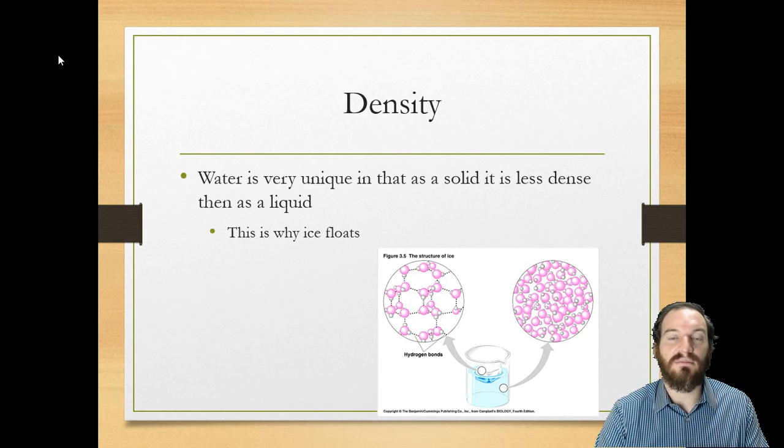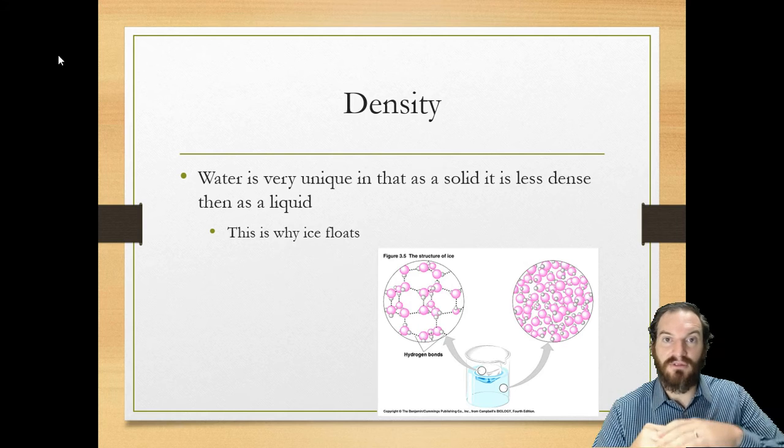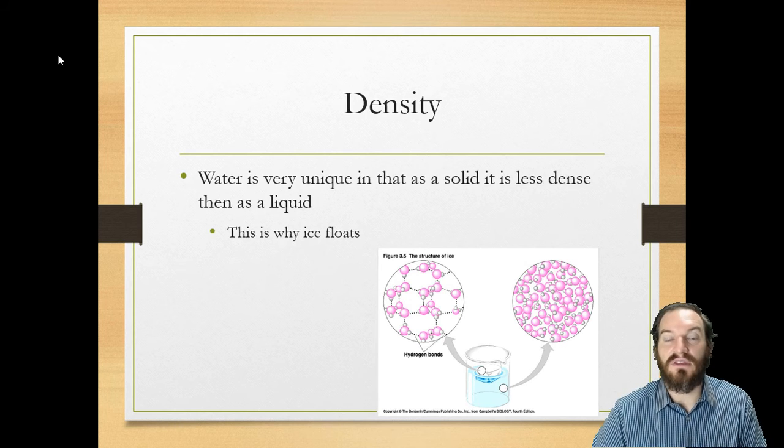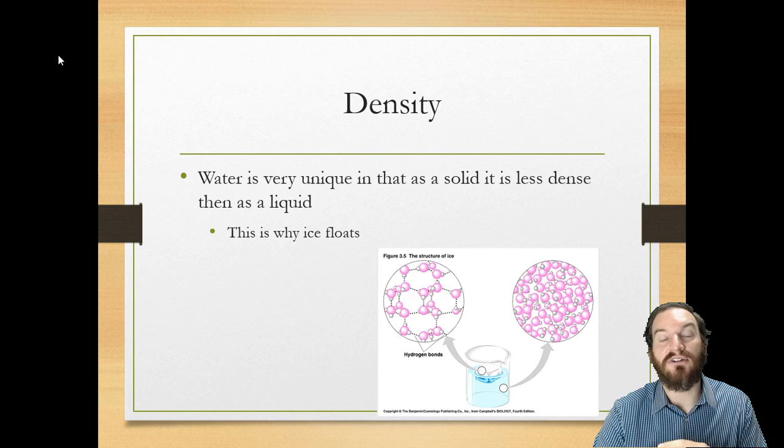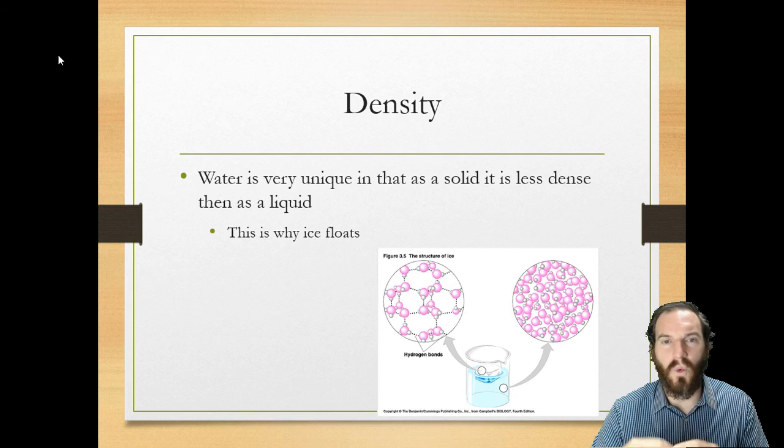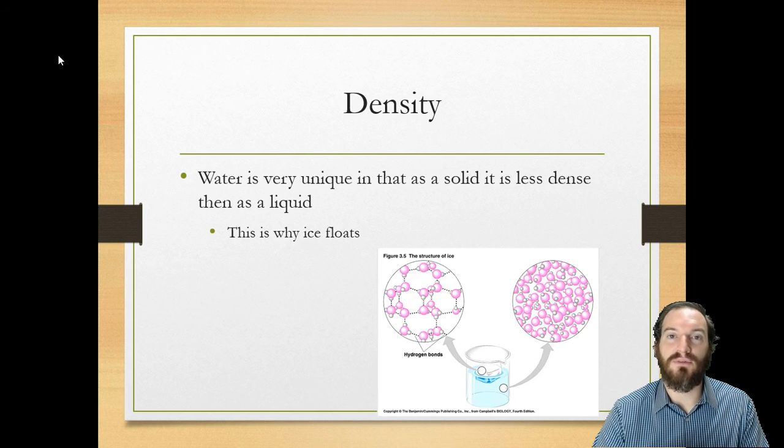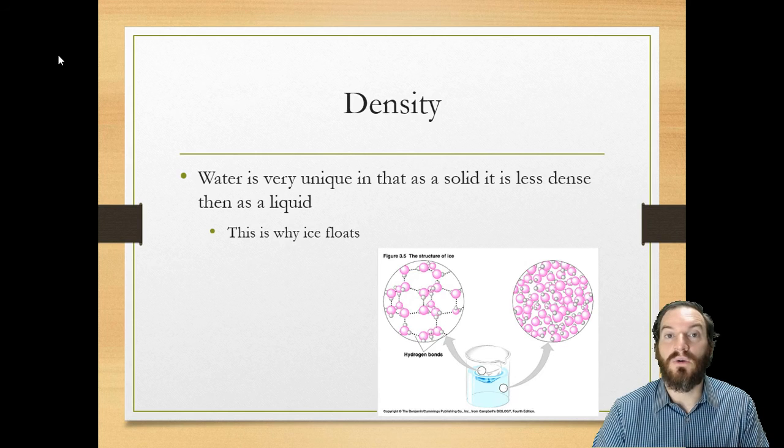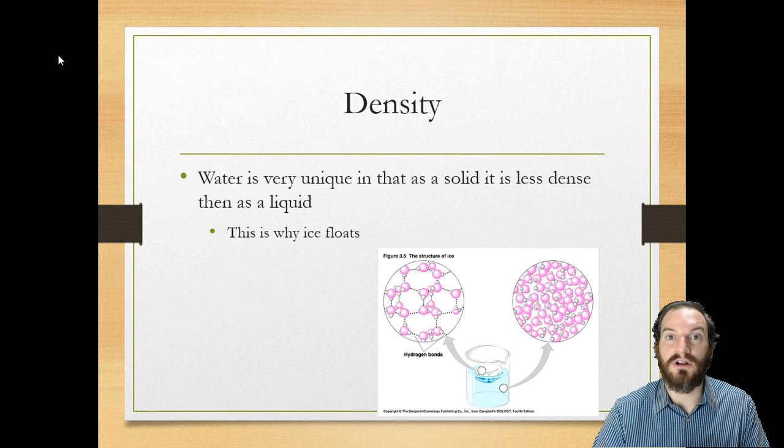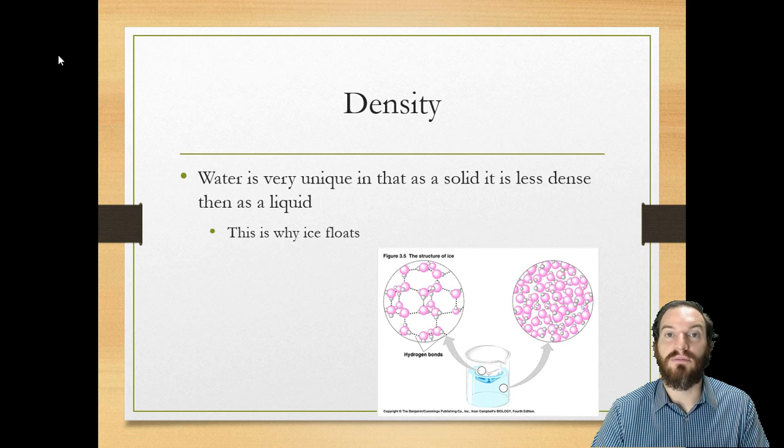But that's why lakes and ponds usually never freeze all the way solid. They're never going to freeze all the way down because it's insulating. So it's trapping a lot of heat energy deeper in the water. It's not like the water is getting warmer, but it's staying at a certain temperature and it's kind of protected from being frozen. And that's why a lot of organisms can survive in the water late into the winters and stuff like that without dying off from being frozen.